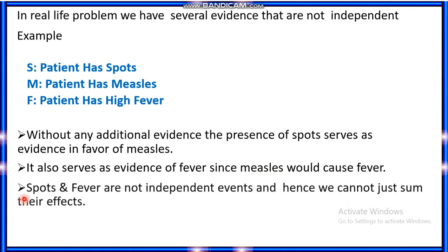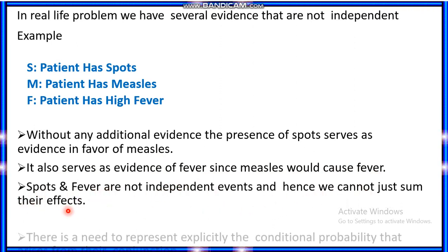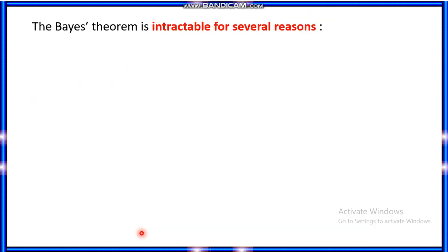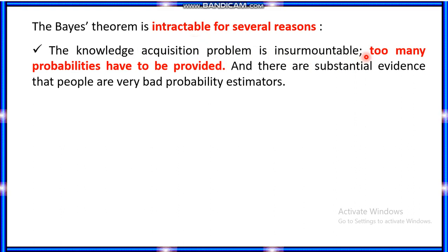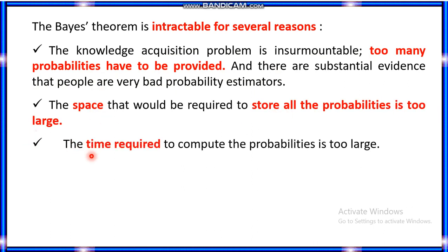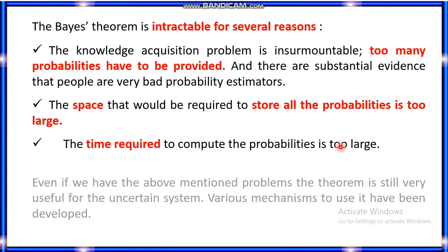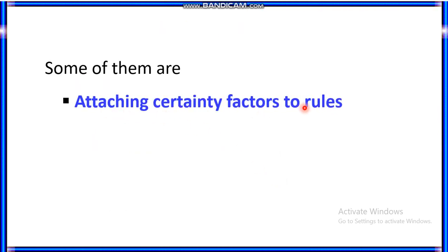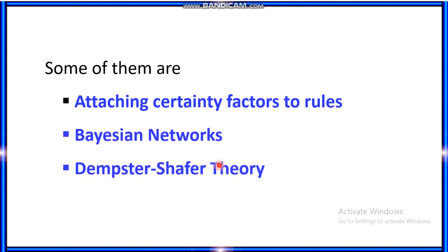In general, where we have several pieces of evidence that are not independent — for example, if a patient has spots (S), measles (M), and high fever (F) — the presence of spots serves as evidence in favor of measles and also as evidence of fever, since measles can cause fever. Spots and fever are not independent events and hence we cannot just sum their effects; we need to represent explicitly the conditional probability arising from their conjunction. This is where Bayes theorem provides an advantage. However, Bayes theorem is intractable for several reasons: the knowledge acquisition problem is insurmountable because too many probabilities must be provided, the space required to store all probabilities is too large, and the time required to compute them is also too large. To solve these problems, there are mechanisms: attaching certainty factors to rules, Bayesian networks, and Dempster-Shaffer theory, which will be covered in subsequent videos. Thanks for watching.